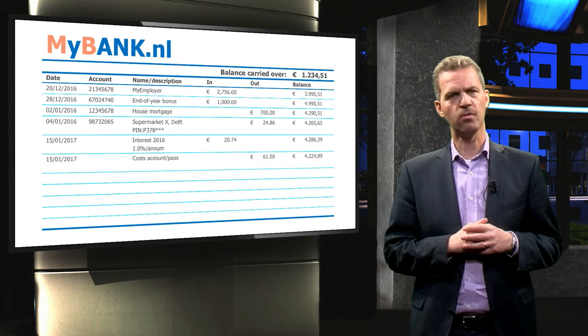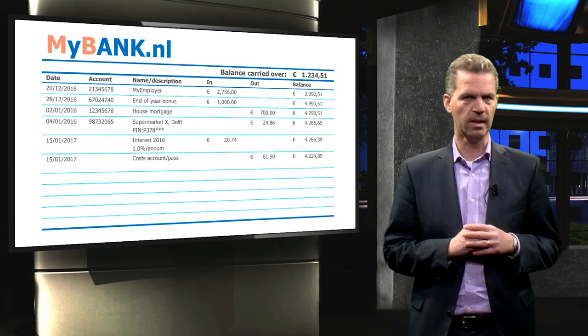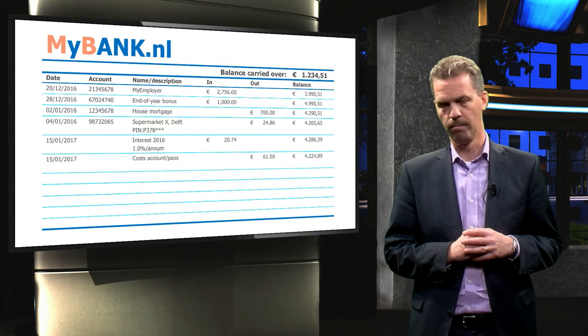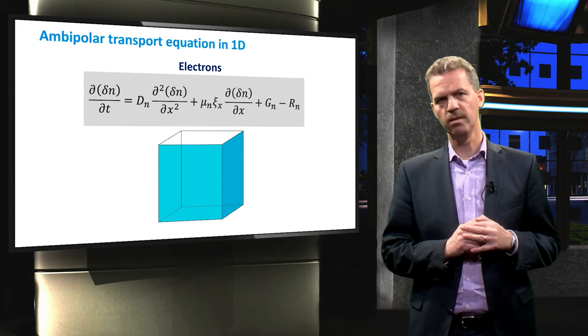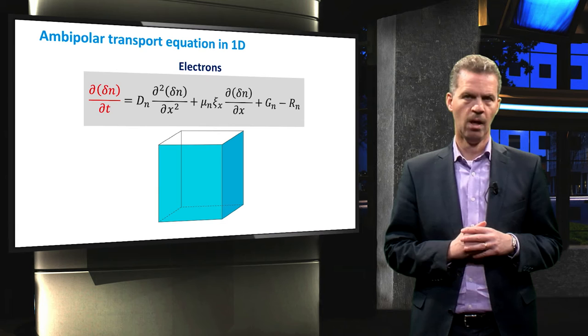Now let's turn to the ambipolar transport equation. In this lecture, we will not derive this equation mathematically, but we will conceptualize using the volume element as shown earlier. The ambipolar transport equation is given by the following relation. This equation relates all possible charge transport processes in the volume element to the time rate change of the carrier concentration.